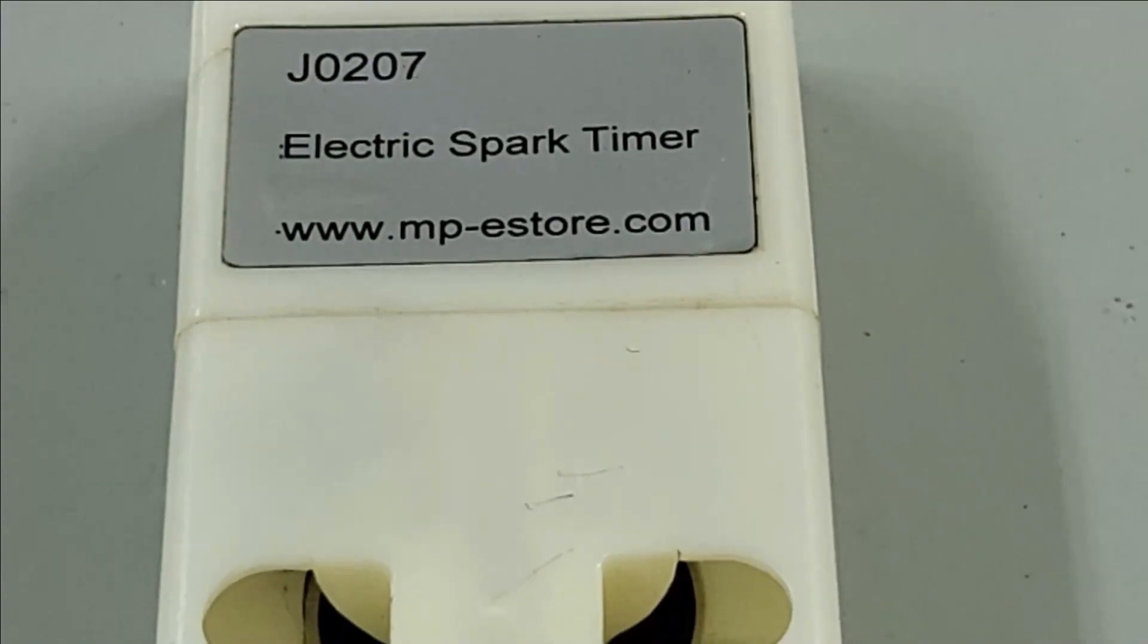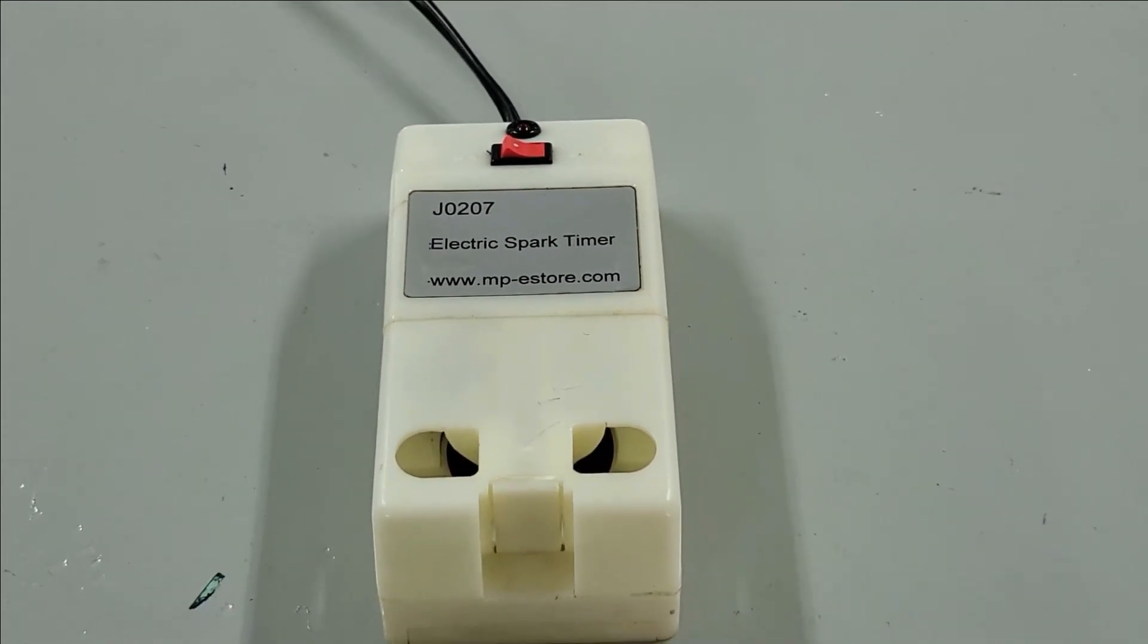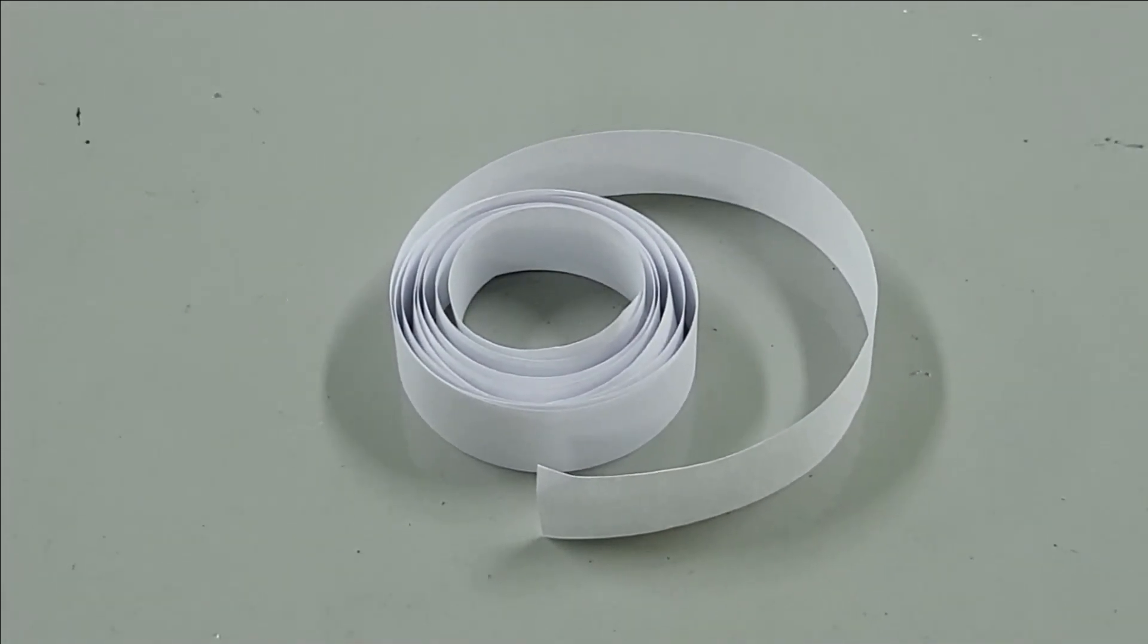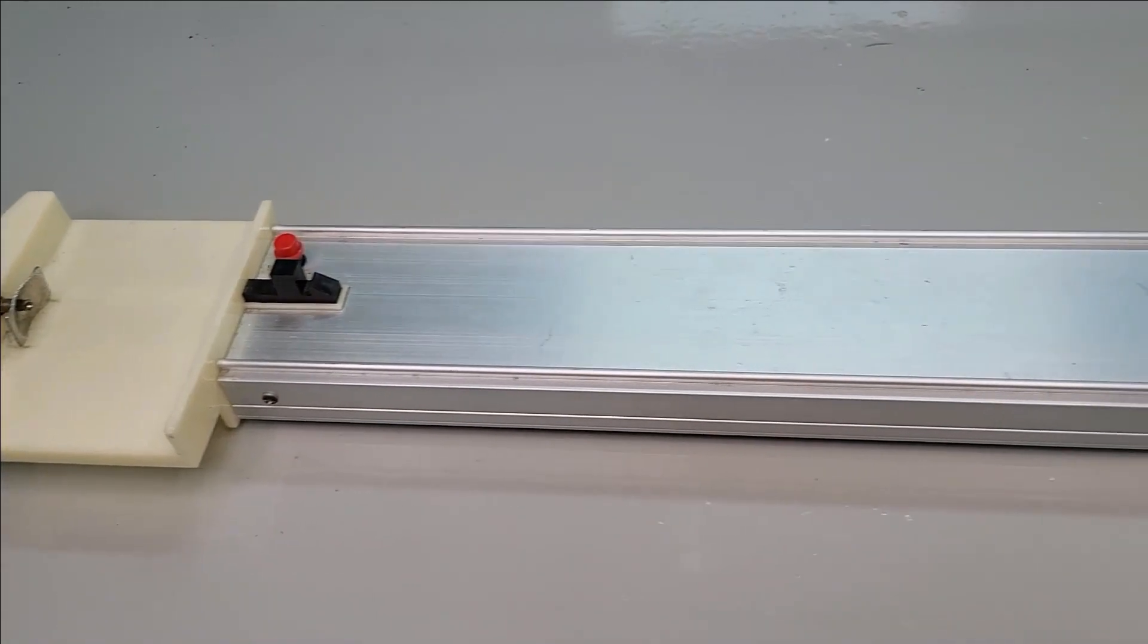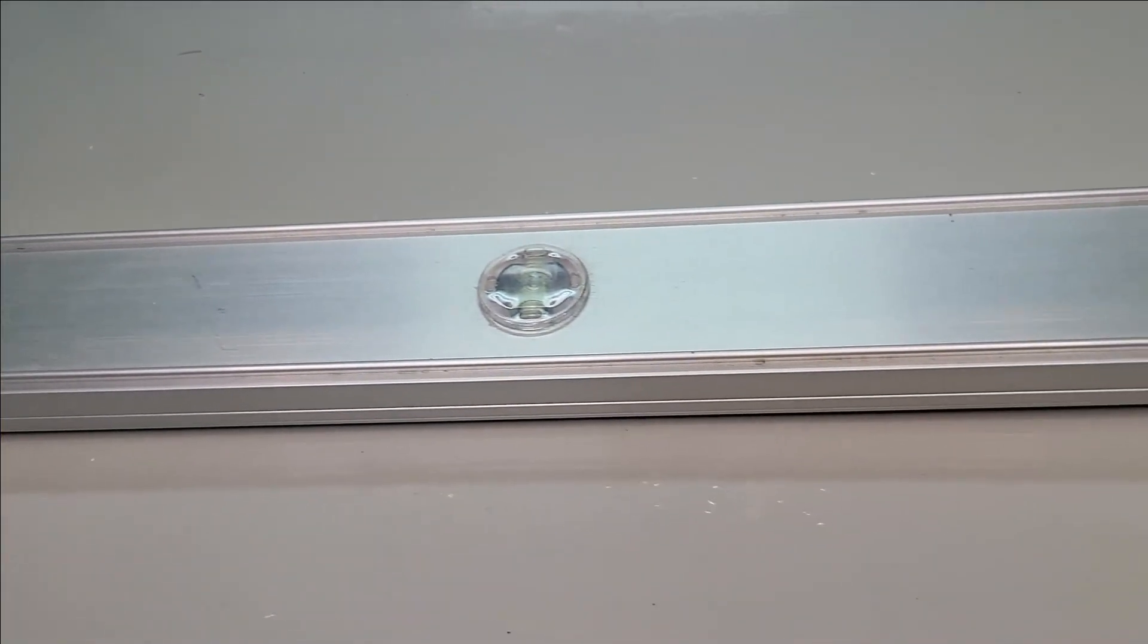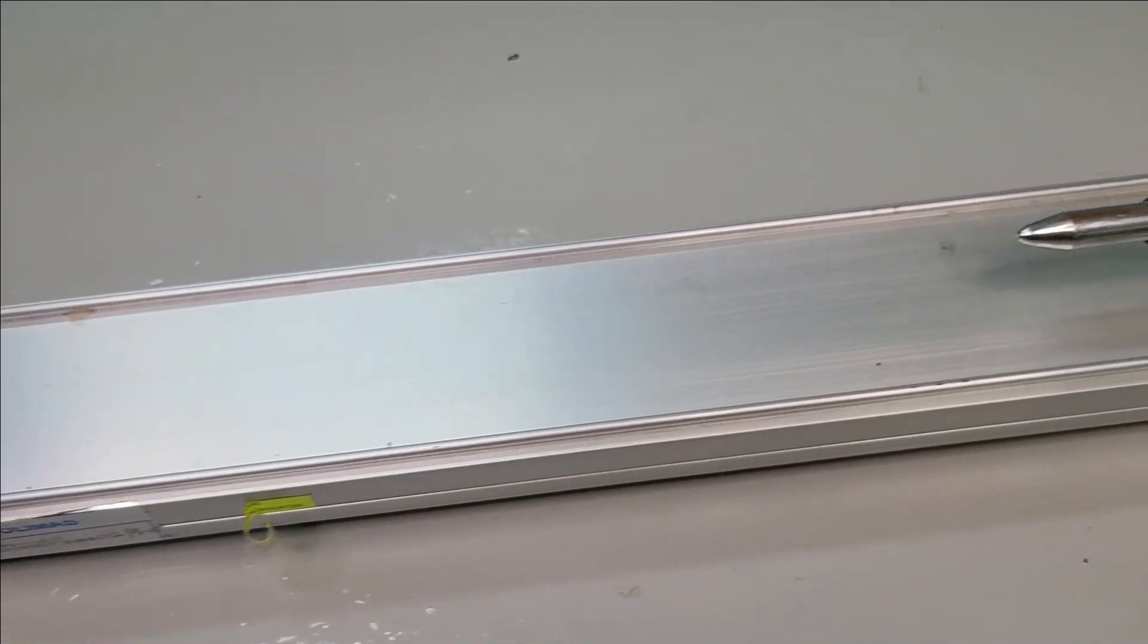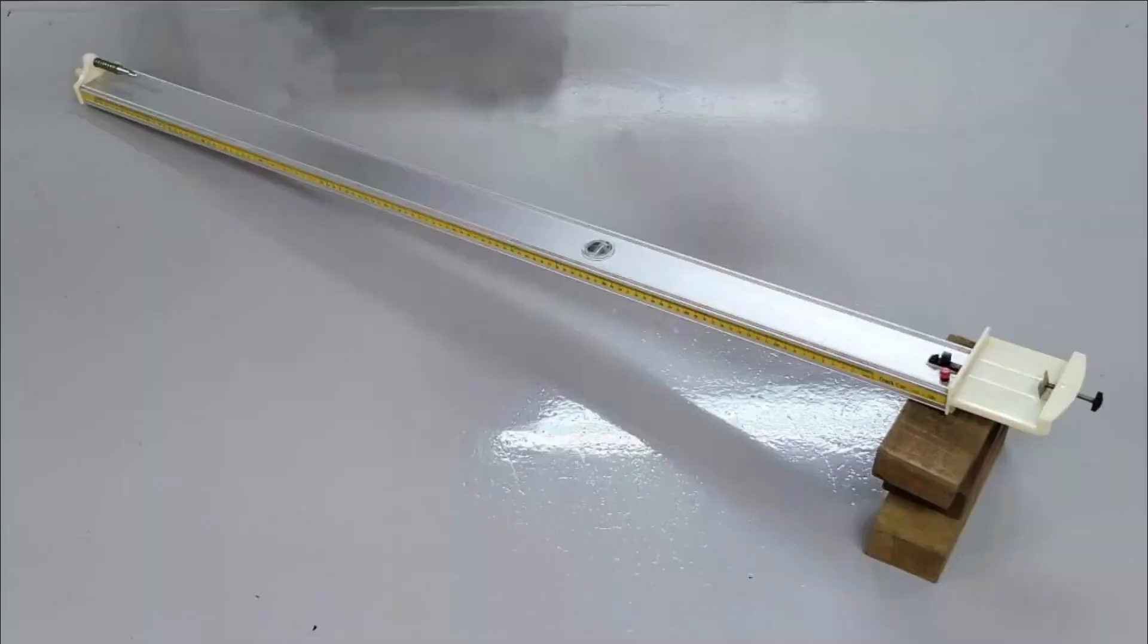Apparatus: Electric spark timer, ticker tape, and runway. The runway is inclined about 15 to 25 cm so that the trolley will roll down freely from rest without any applied force.